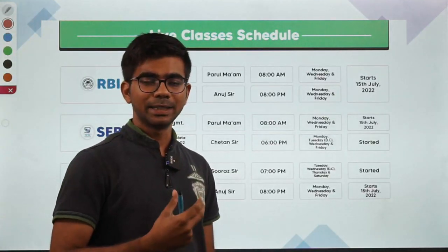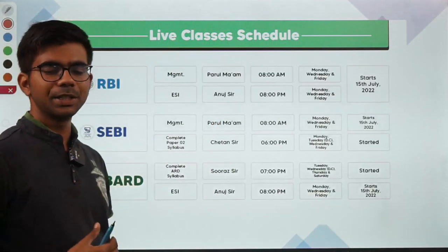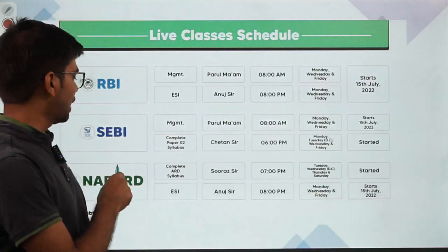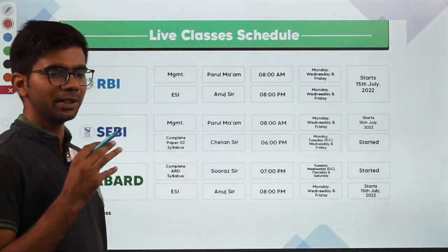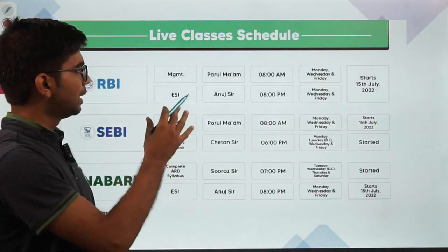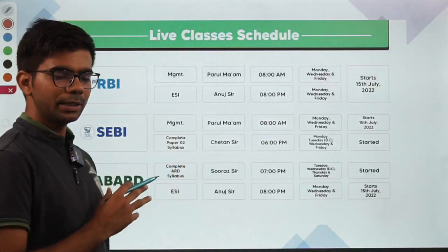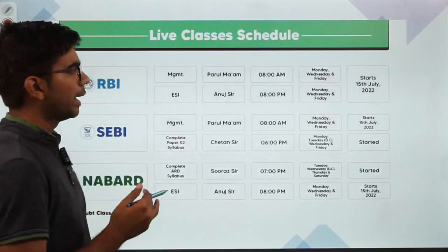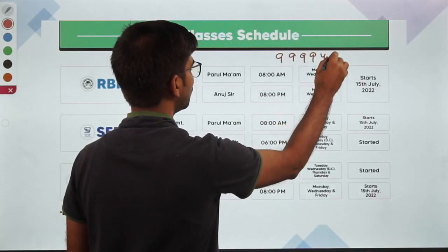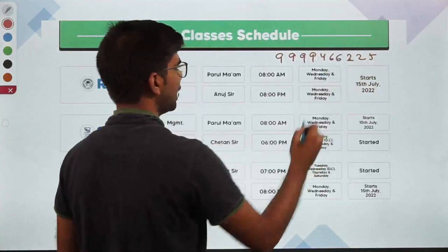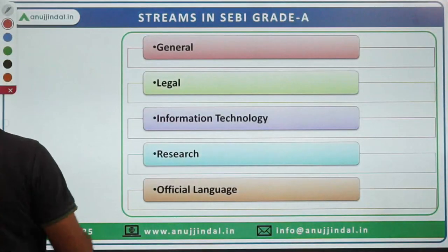Before I tell you the job profiles and areas you may be working in, here is the entire live classes schedule for all three regulatory board examinations we are offering: RBI Grade B, SEBI Grade A, and NABARD Grade A. Through live sessions, we are studying for all these exams. You can also go to our website or call our counselor at 99994622-5 to get more clarity.